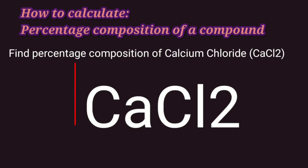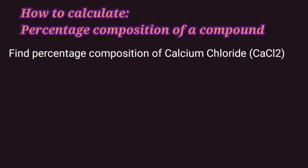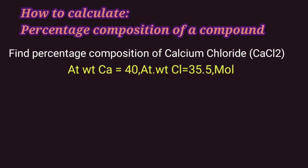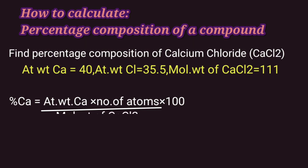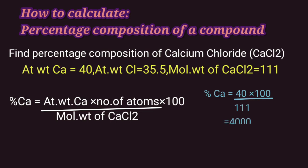Calcium chloride has 2 elements: calcium and chlorine. So we have to find the percentage of calcium and the percentage of chlorine in calcium chloride. Percentage of calcium in calcium chloride is equal to atomic weight of calcium multiplied by number of calcium atoms, divided by molecular weight of calcium chloride, into 100. That gives us 40 into 100 upon 111.